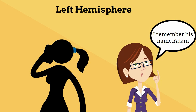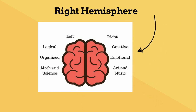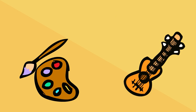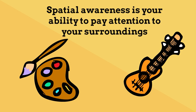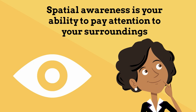The right hemisphere of the brain is creative and emotional. It helps with art and music, and helps with spatial awareness. The right side also helps make sense of what you see and helps with face recognition.